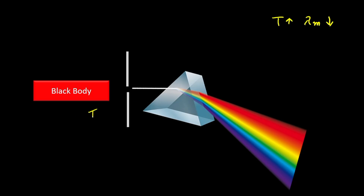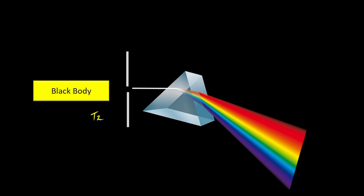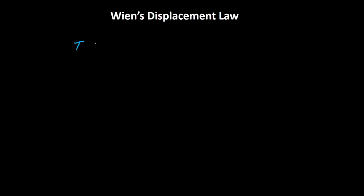Let's say if the temperature of the black body is T1, it is appearing red to us — it is glowing red. As you increase the temperature to T2, where T2 is greater than T1, the body becomes yellow in colour. We know that the wavelength of yellow is lesser than the wavelength of red light. So, as we increase the temperature, lambda m decreases. We can summarise that temperature is inversely proportional to lambda m, and by cross-multiplying, temperature times lambda m is a constant.